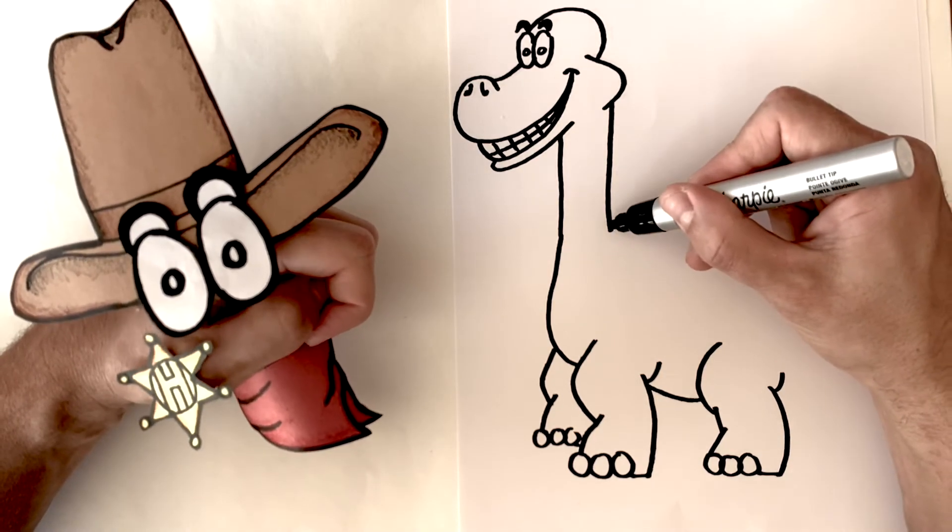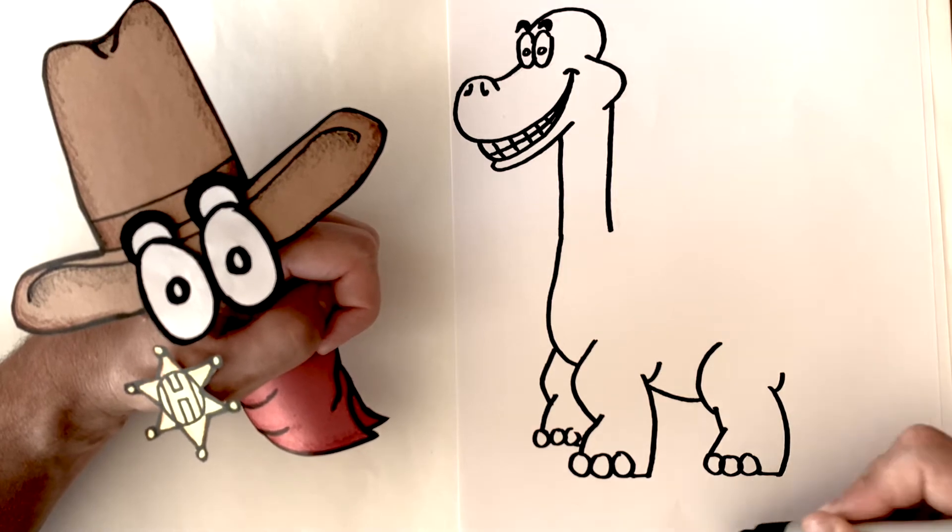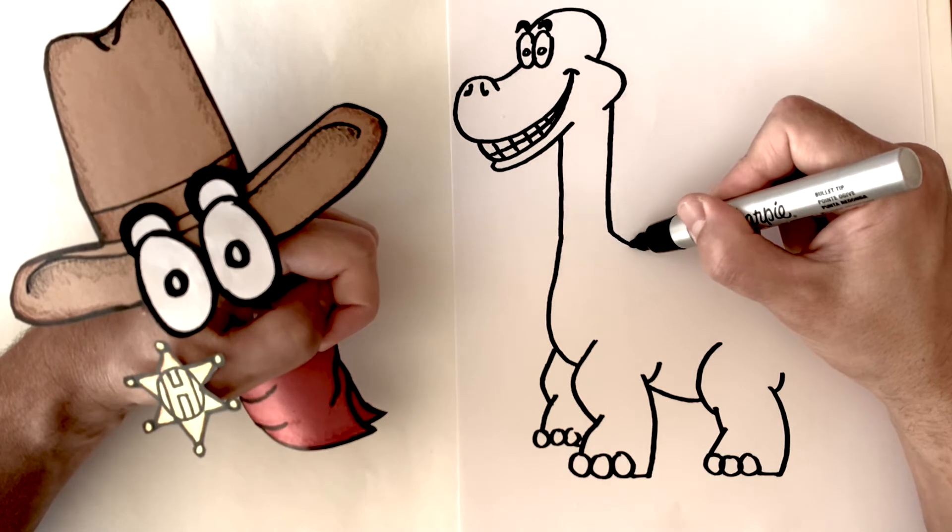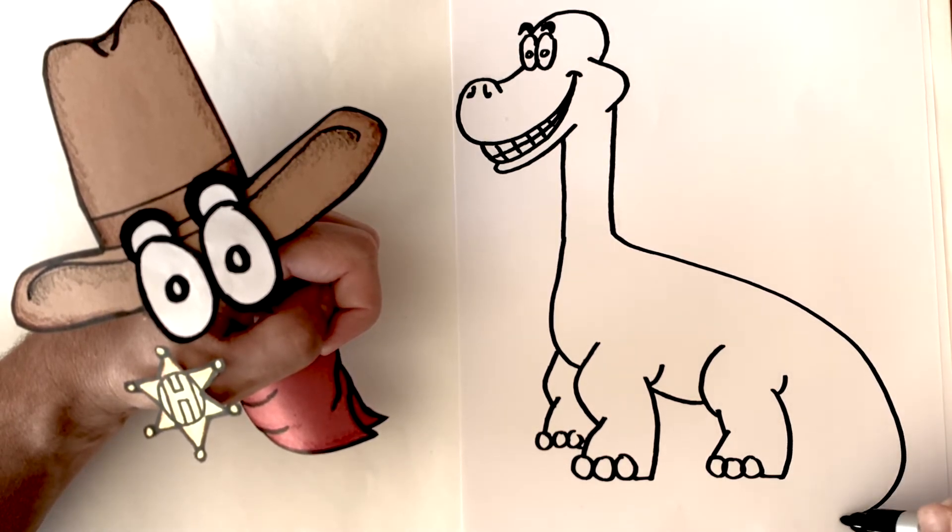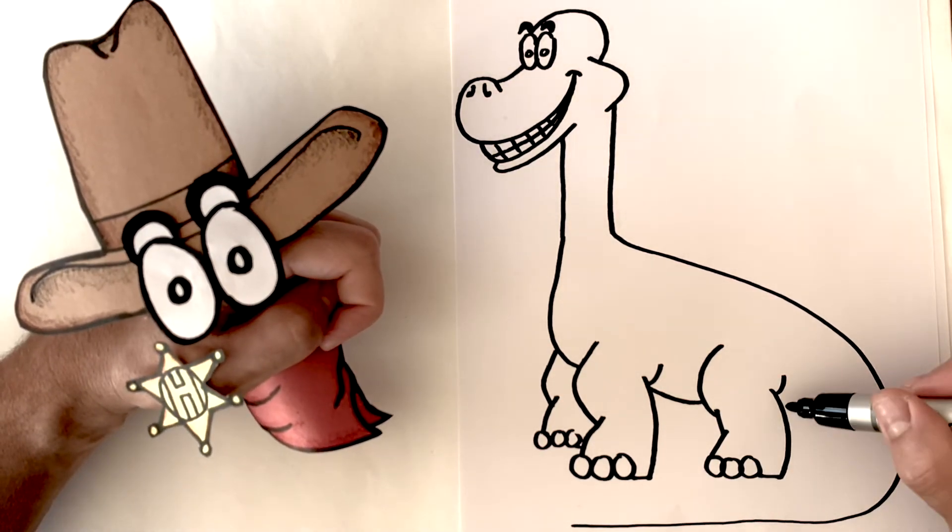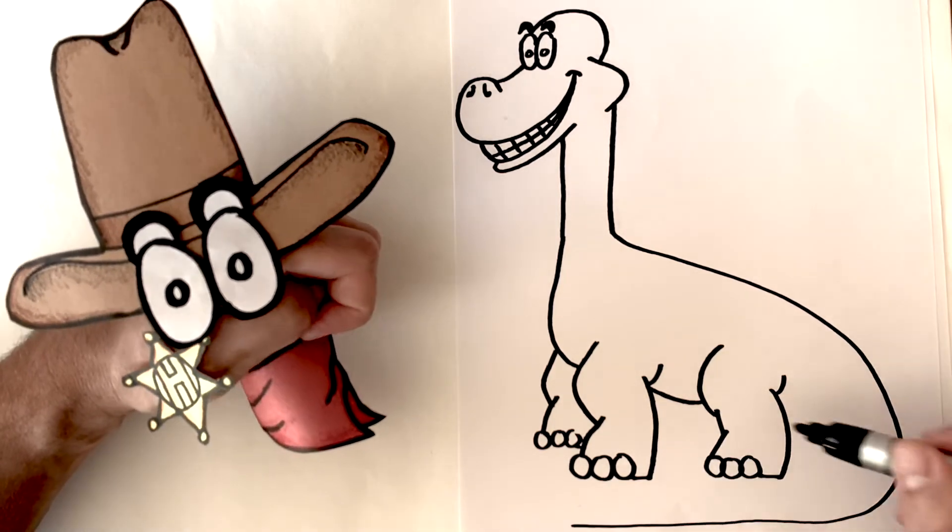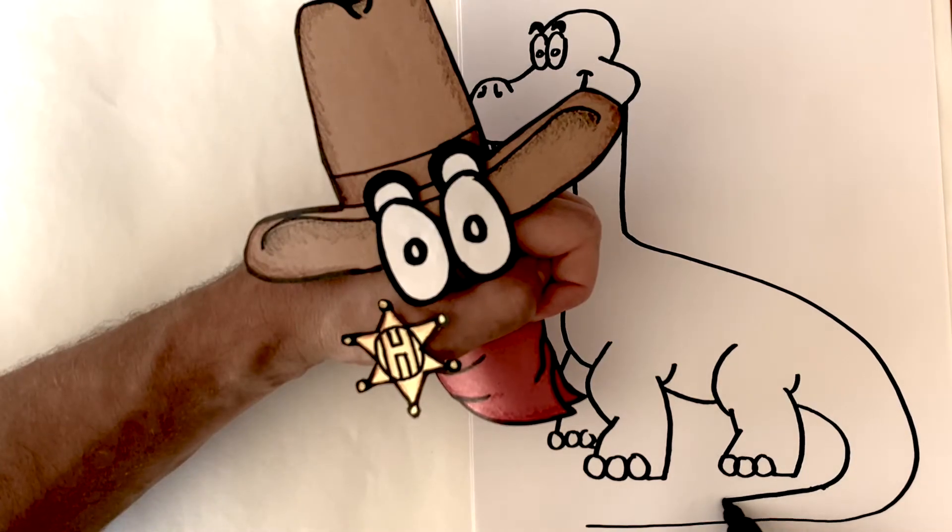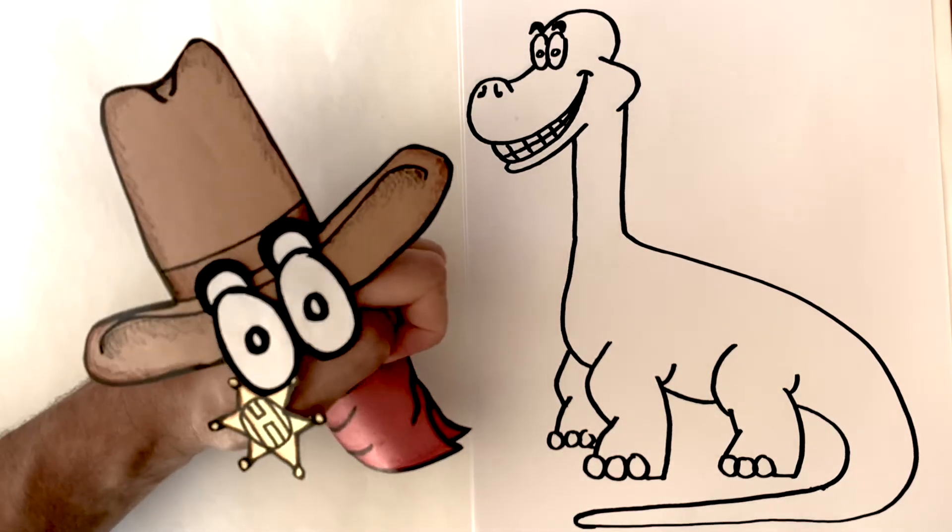Now we're gonna draw a curve line all the way down and then all the way around to draw the back and tail. Watch! And now we're just gonna draw a line from here to the bottom of the tail. There we go!